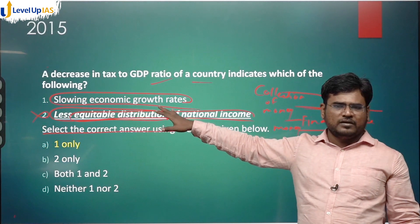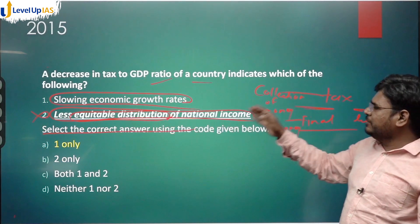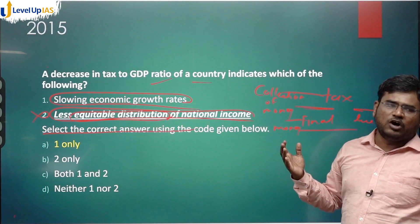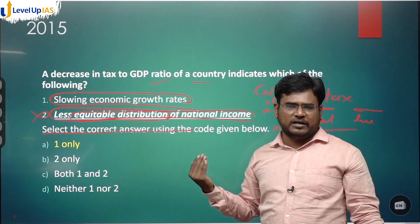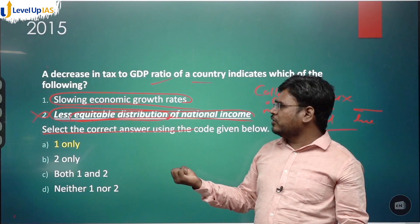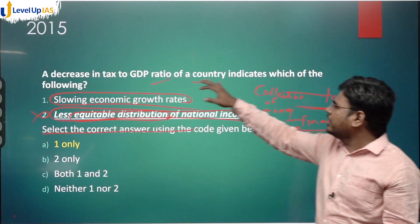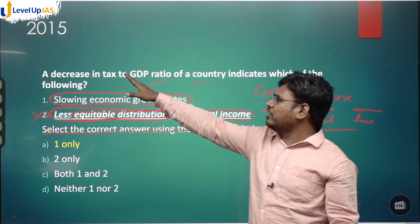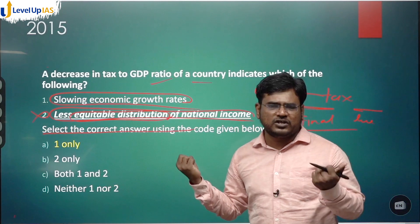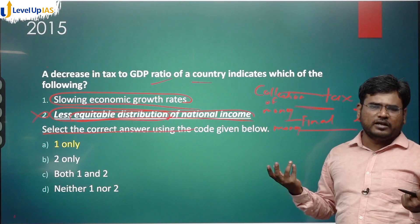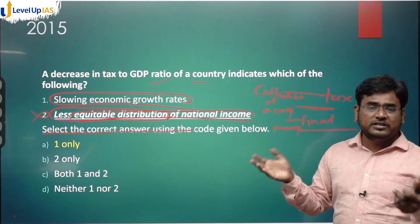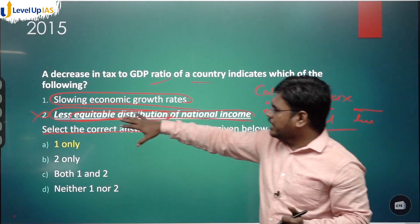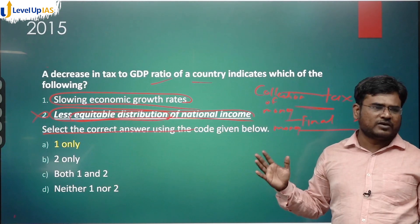From GDP, you won't get any data on equitable distribution of resources — like how many BPL people are in the country. GDP and tax data are just financial numbers. India's GDP is 2.6 trillion; it only indicates how much wealth exists in the country, not how that wealth is distributed.